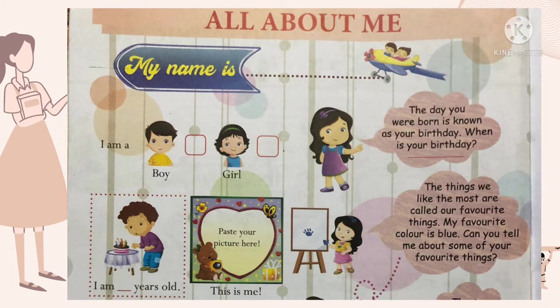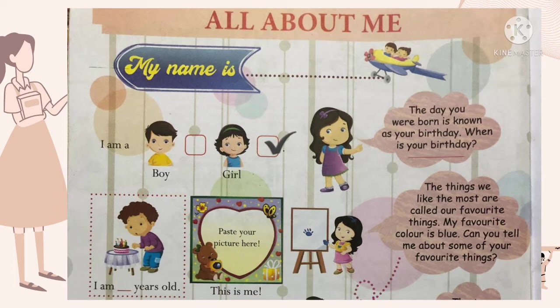Start writing. Sabse pehla diya hai 'My name is dash' — yahan pe aap khud ka naam likhoge. For example, picture mein Riya hai, toh main yahan Riya ka naam likhungi. Doosra hai 'I am a boy or girl' — agar ladki ho toh ladki pe tick karo, and if you are a boy then tick the boy box. Next is 'I am dash years old' — if you are six years old write six, if seven then write seven. In the next box you have to paste your picture.